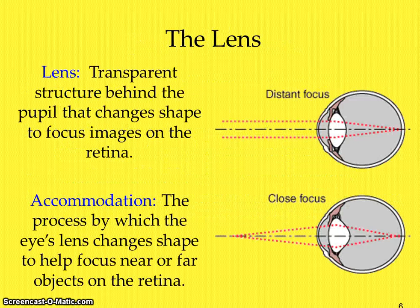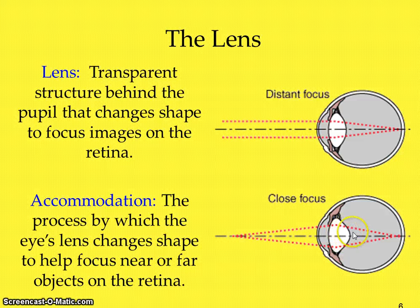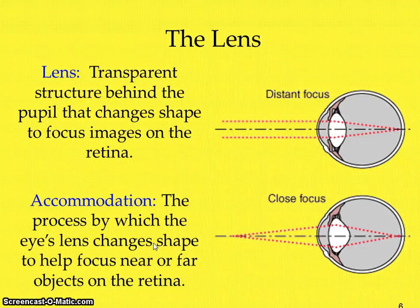Behind the pupil you've got the lens. Looking at this example, if not a lot of light is entering the eye, you can see the shape of the lens. For a close focus — something closer to your eye — the lens is going to change shape and then help focus that image on the back of your retina. Accommodation occurs when the shape of the lens changes to focus the object that is either near or far.